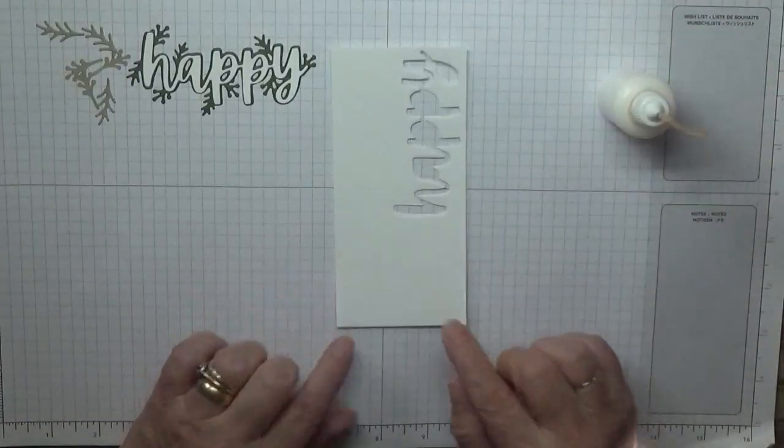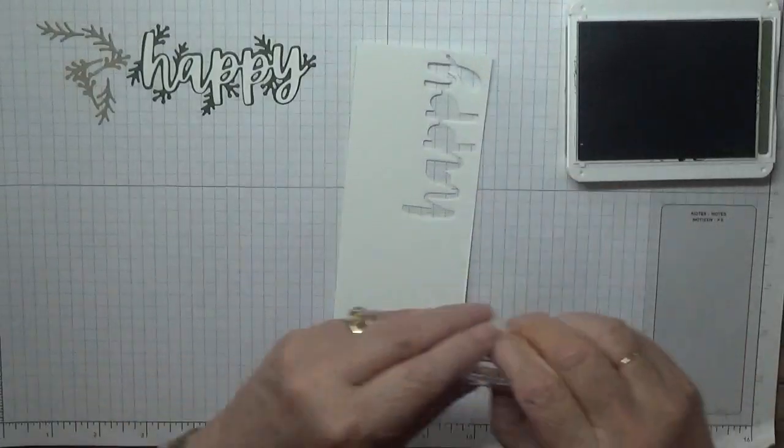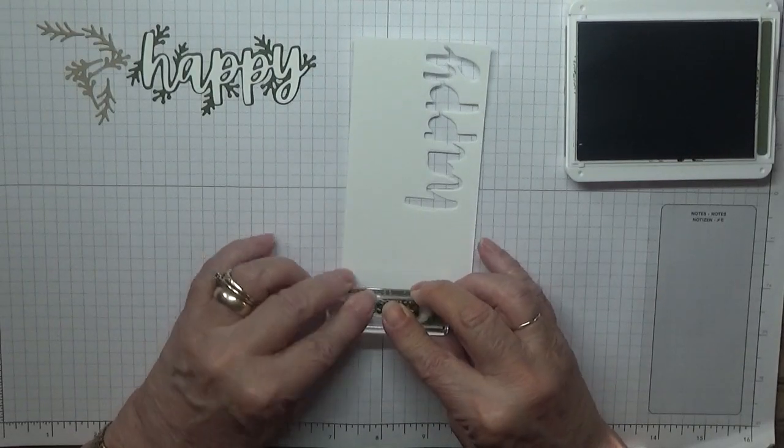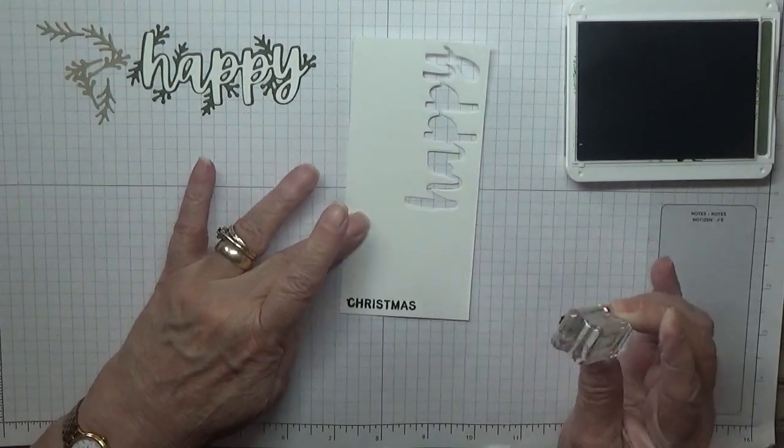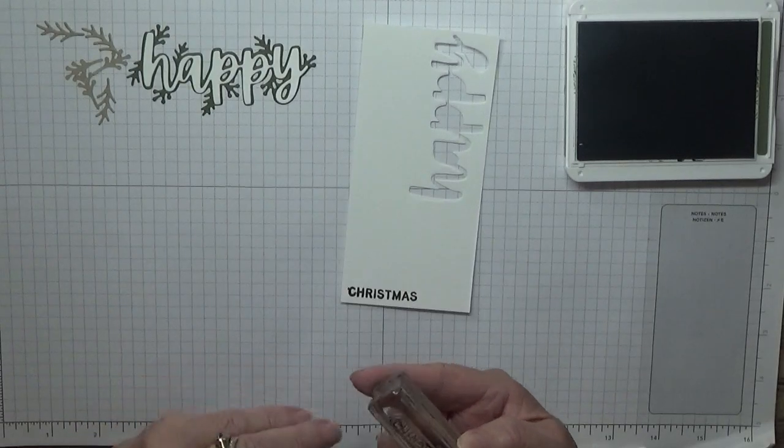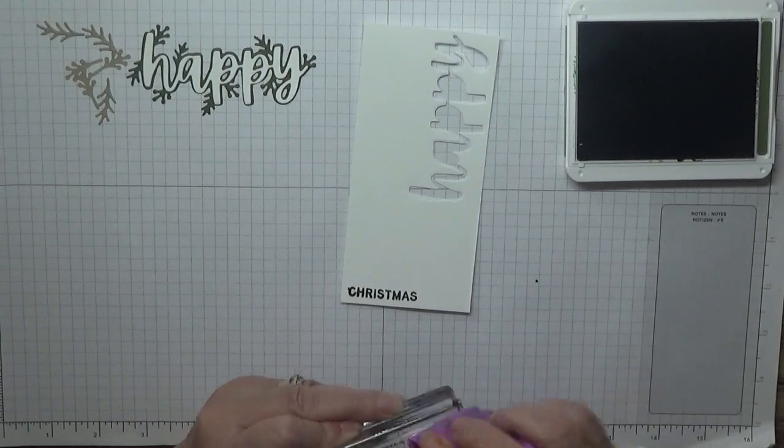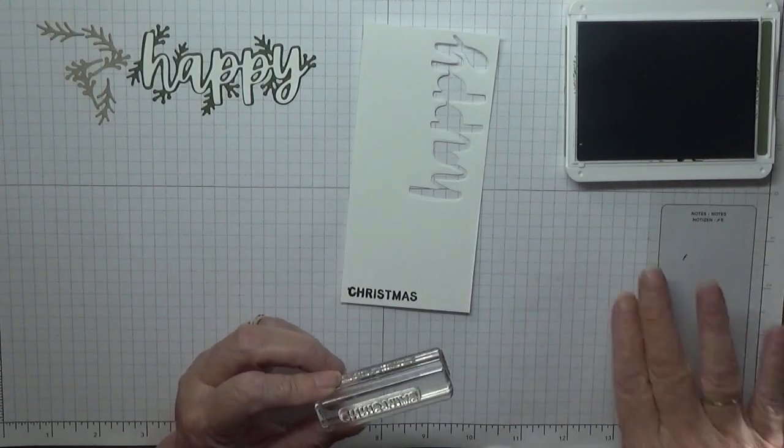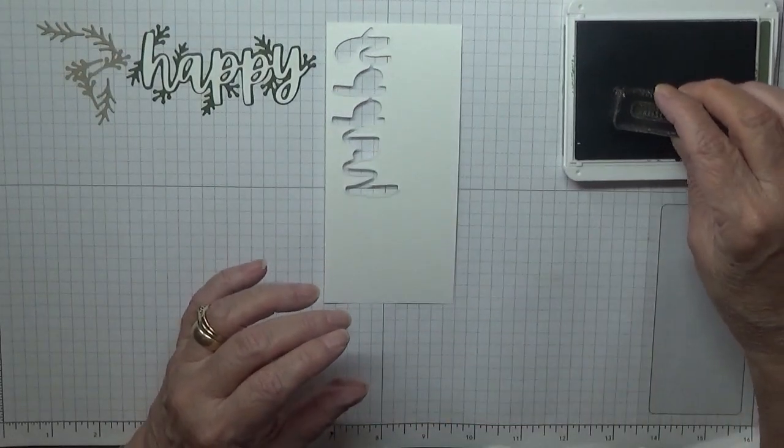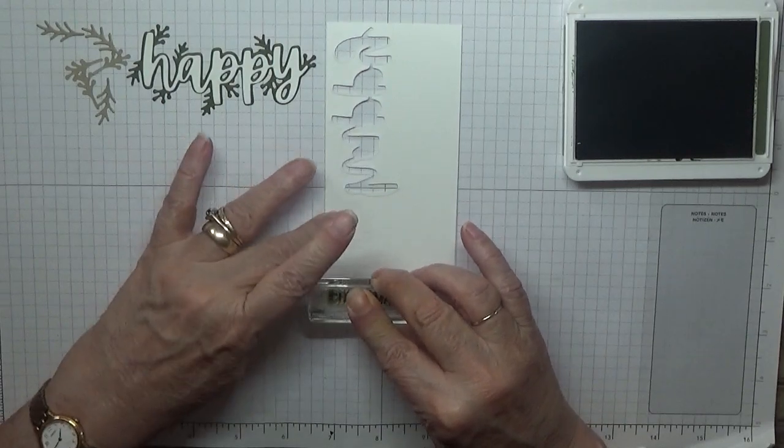Right, so that's that done. We just need to stamp our Christmas. So I'm going to stamp it along the bottom. I've got some Mossy Meadow. I've got the word Christmas upside down and I'm going to stamp that there. Right, I have got bits everywhere. Let's do that again. It's got like a little star on the C. That's better.